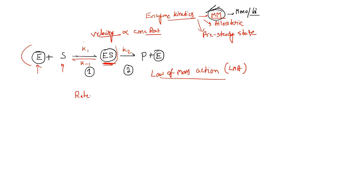Based on the Law of Mass Action, we can determine the rate of an enzymatic reaction. The rate equals k1 multiplied by the enzyme concentration multiplied by the substrate concentration. This gives us the rate constant of the forward reaction of enzyme-substrate complex formation. The rate of the reaction essentially means the rate of formation of product.